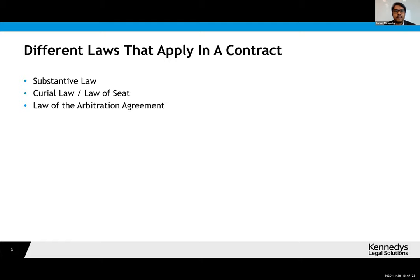Generally speaking, when you've got a contract with an arbitration agreement in it — and in the shipping context, all of us are familiar: charter parties, bills of lading, construction contracts — they usually tend to have arbitration agreements in them. In those sorts of contracts, there are three sorts of laws to bear in mind. The first is the substantive law of the contract — that's the law usually in your charter parties. For instance, it'll say the governing law of this contract is English law, meaning all clauses under that contract are to be governed by English law.